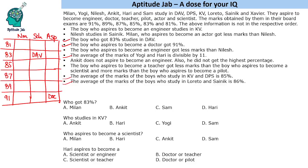We have three statements based on averages. The average of the marks of Yogi and Hari is divisible by 11. All marks are in the range 81 to 91, so this average should be 88. The two possibilities to get an average of 88 are: 85 and 91, or 87 and 89.